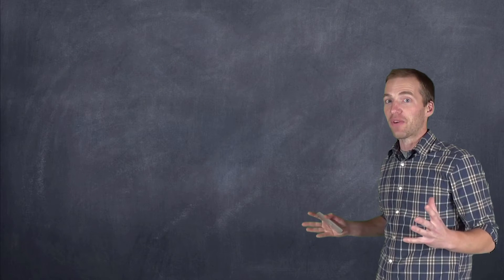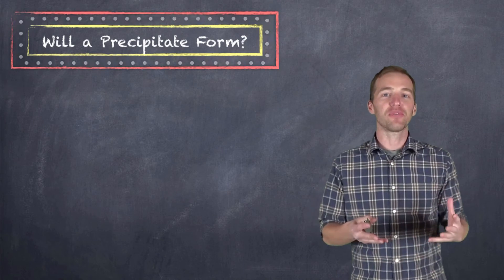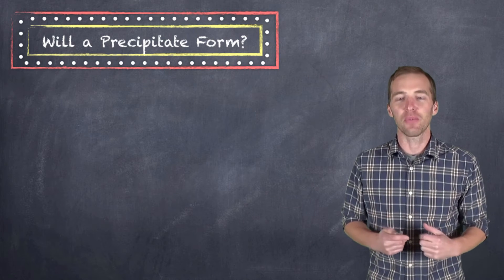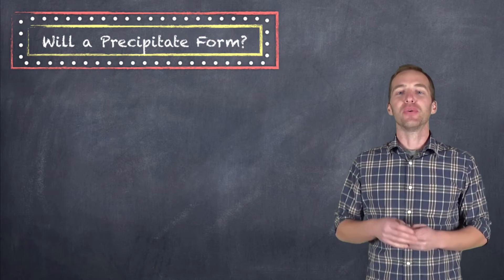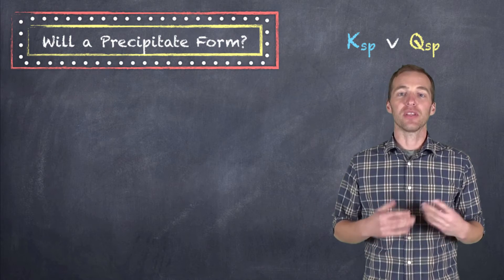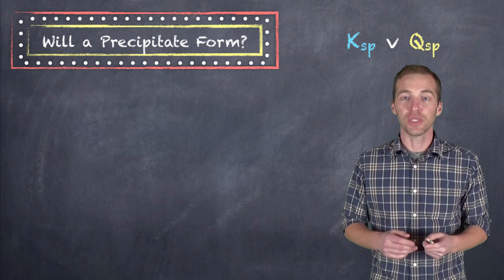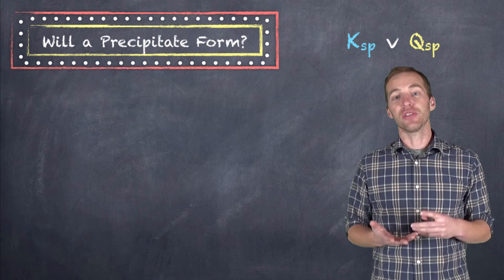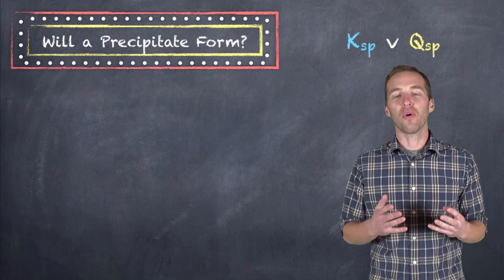It's time for everybody's favorite game. Will a precipitate form? That's right. And in order to figure out whether or not a precipitate will form, we have to compare the Ksp to the Qsp. Very similar to what we did with the equilibrium constant and the reaction quotient. Here we have the solubility product constant and the solubility product quotient. Or the Ksp in comparison to the Qsp in order to figure out whether or not a precipitate will form.